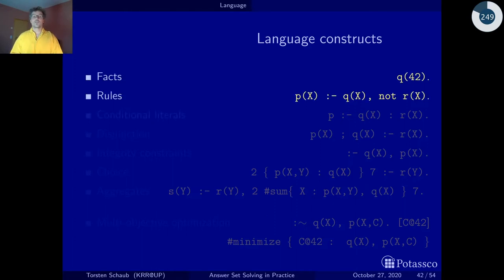The first two components, facts and rules, correspond to what I've been calling the mathematical core of ASP. These are just rules that are composed of atoms. Here, p of x, q of x, r of x. The only difference here is the x. In the modeling language, we also have variables that stand for objects, and such a rule here then abbreviates or is a schema that stands for all ground rules that are obtained by systematically replacing all the variables.